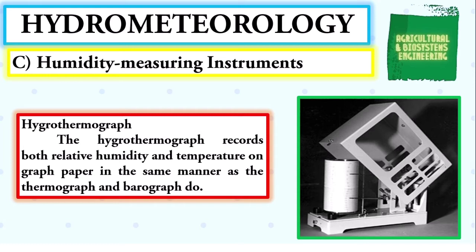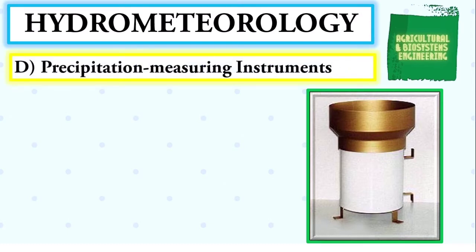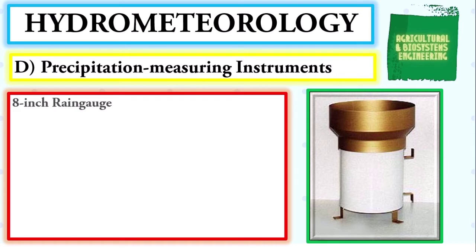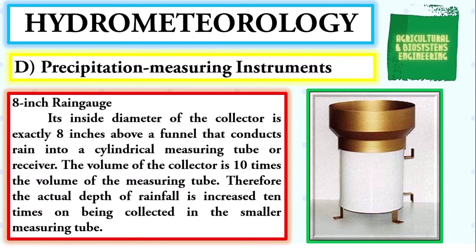Next, the hygrothermograph, which records both relative humidity and temperature on graph paper in the same manner as the thermograph and barograph do. Next, we proceed with the instruments used to measure precipitation.